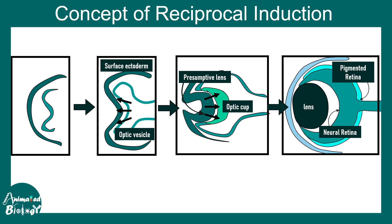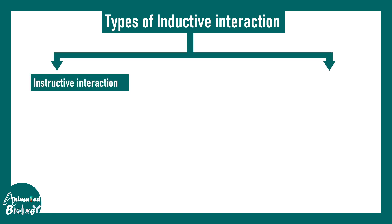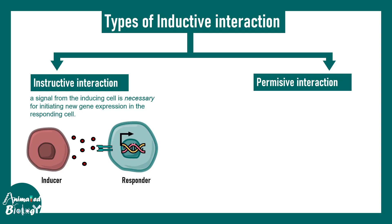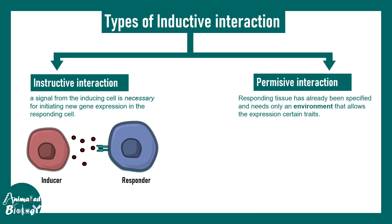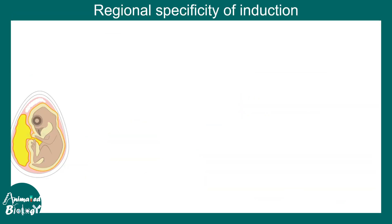There are two flavors of inductive interactions: instructive and permissive. In instructive interactions, a secreted signal from the inducer is intercepted by the responder, causing the responder to take a different fate. Permissive interaction is different — it comes from the molecular environment surrounding the cell, meaning the extracellular matrix provides inductive and permissive signals to induce a particular fate, such as becoming fibroblasts.